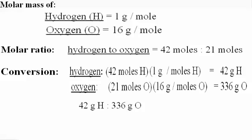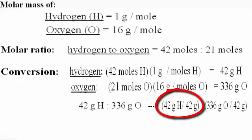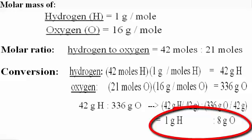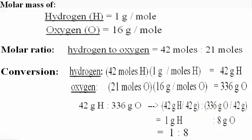And we do that by taking the lower number, in this case, which is 42 grams of hydrogen, dividing that through for both hydrogen and oxygen. So here I've divided 42 grams of hydrogen by 42 grams, and then 336 grams of oxygen by 42 grams. And when we calculate that through, we find that the reduced ratio is 1 gram of hydrogen to 8 grams of oxygen, or simply 1 to 8.